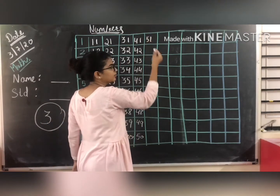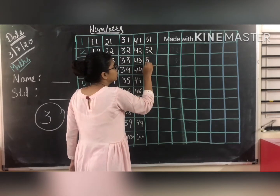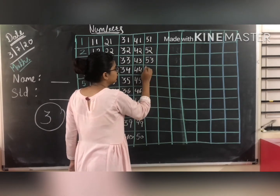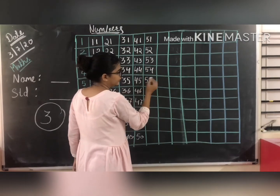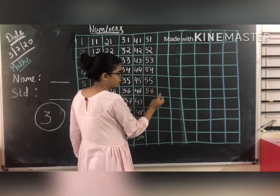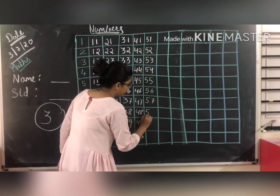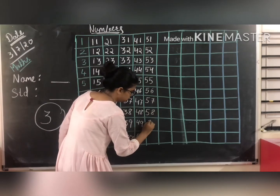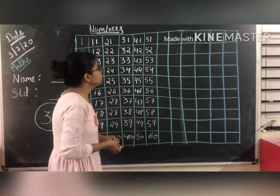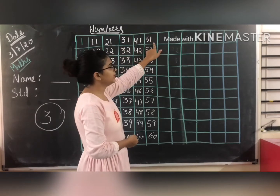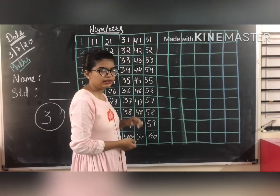Then it comes: 51, 52, 53, 54, 55, 56, 57, 58, 59, and 60. So students, you can see the 1s place is increasing — 1, 2 — it is increasing by 1.